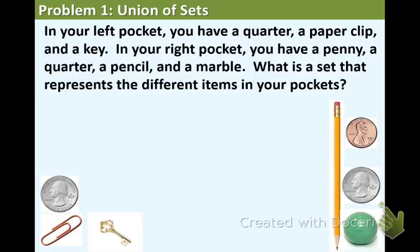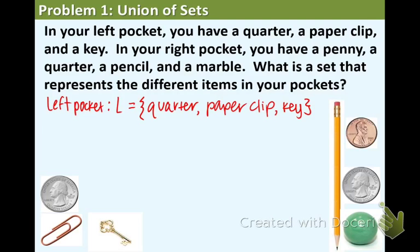Well, what we're doing is we're going to find the union of your left pocket and your right pocket. So first of all, let's write down the sets for left pocket and right, and we'll call left pocket L. L equals, and then just list everything. So there we have a quarter, a paper clip, and a key in the left pocket. And now let's do the same thing for the right, list everything in the right pocket.